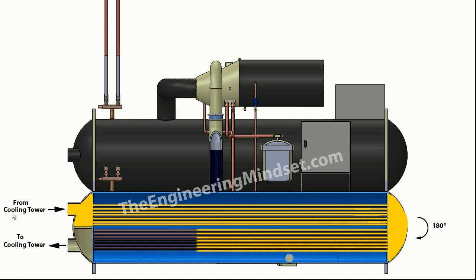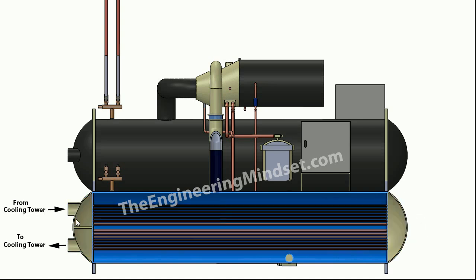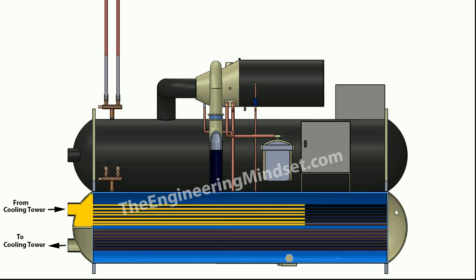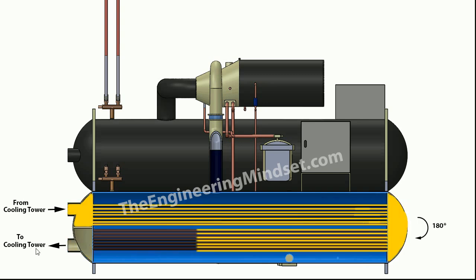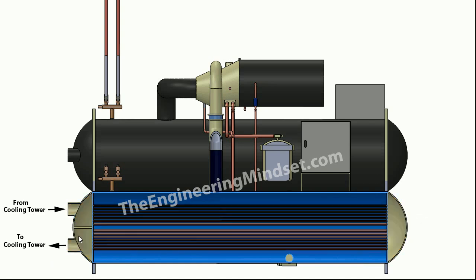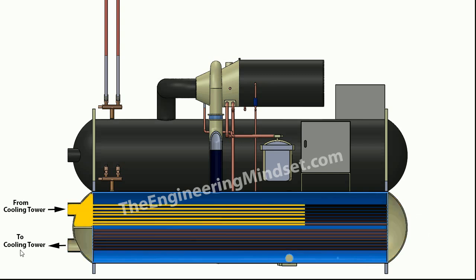The condenser water comes from the cooling tower into the condenser through the water box at the end — this section is removable. The water flows through the tubes all the way to the very end, hits the water box on the far end (which is also removable), does a 180-degree turn, comes back through the tubes, and then exits out of the water box off to the cooling tower, taking any heat it has picked up with it. There is a baffle in between the two flows just to separate and divert the flow through one side.